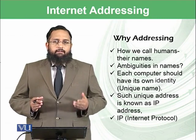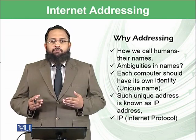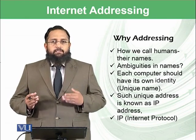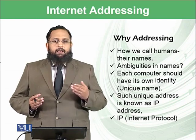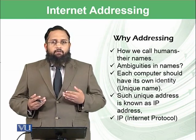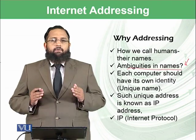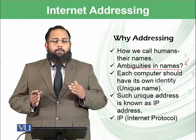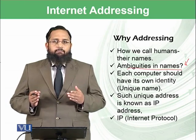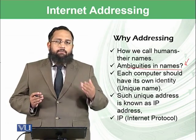Before starting internet addressing, let's have an example with humans when they want to communicate with each another. Each human has a name, and whenever one person wants to communicate with another person, that name is called and then the conversation starts. However, in humans we have ambiguities in names as well. For example, the same name can be shared by multiple humans in the world or even in one region — for example, a name like Khalid Walid could be shared by multiple persons.